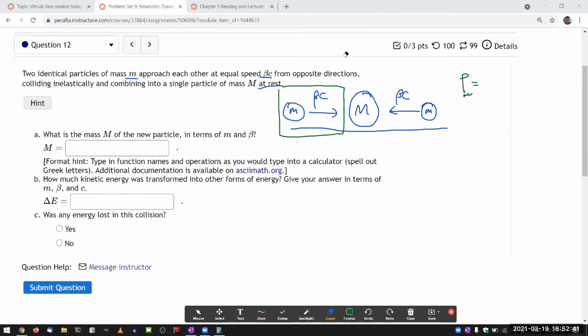The momentum four vector is built out of the relativistic energy and the three momentum. One of the components is the relativistic energy, and if I'm avoiding using c equals one units, then it should be energy divided by c, and then the rest of the components—three components—is what you remember as the momentum.